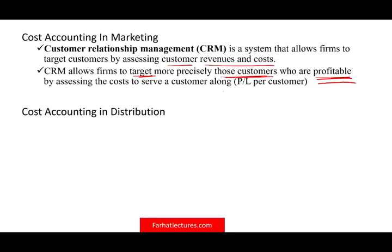A cost information system should give you a P&L per customer so you know how much money you are making per customer. You'll focus on those producing profit, and work harder on those not generating revenue — maybe they need more marketing or need to learn more about the product. You want to identify low-profit customers not to neglect them, but to work harder to show them the value of your product.